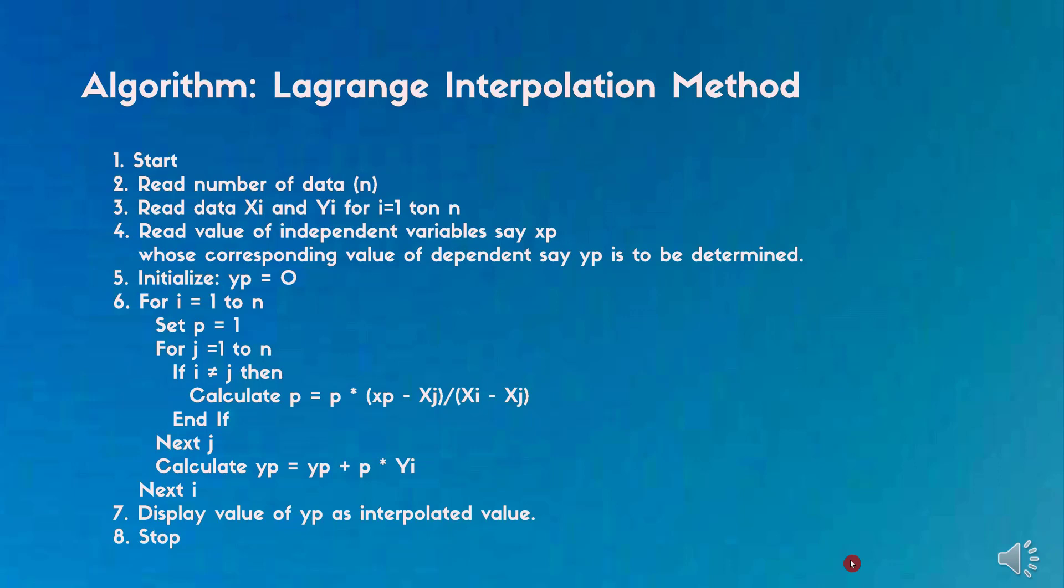Calculate yp equals yp plus p times yi. i gets incremented and continues till the for loop is executed. It displays value of yp as interpolated value. Hence the program stops.